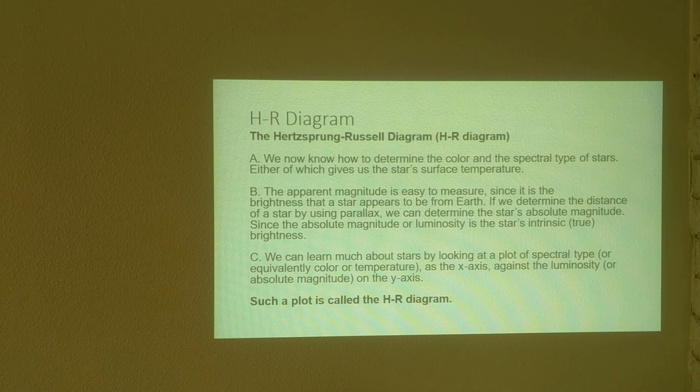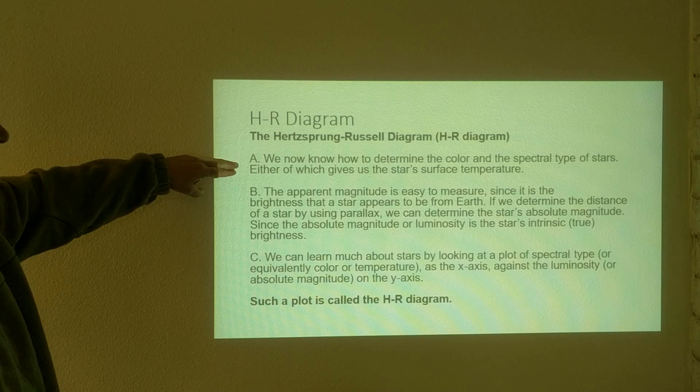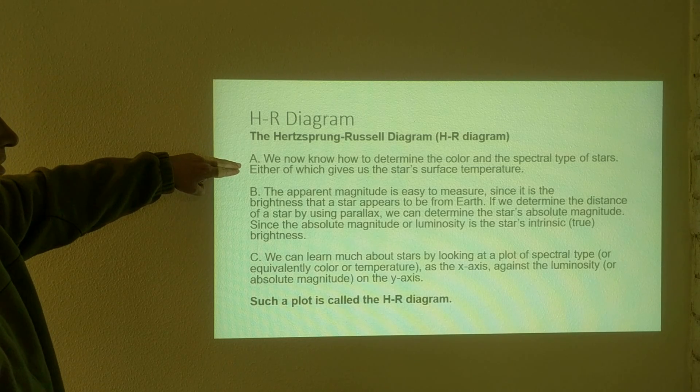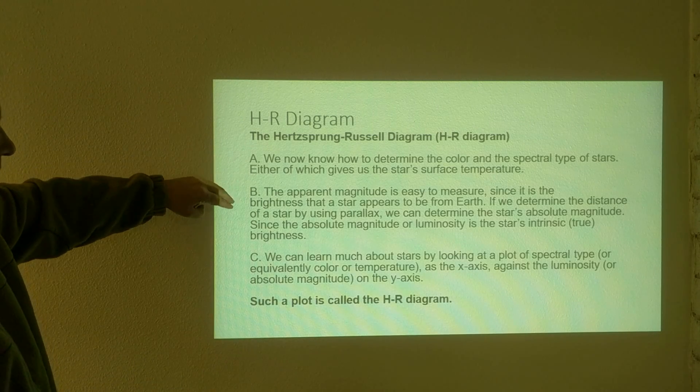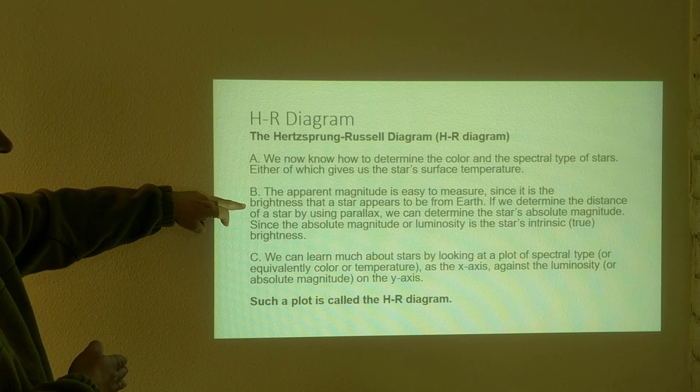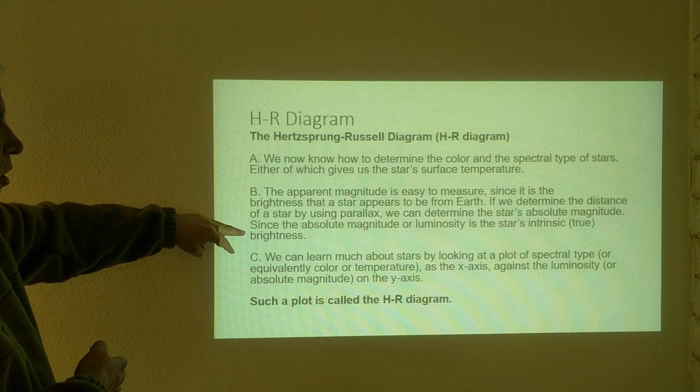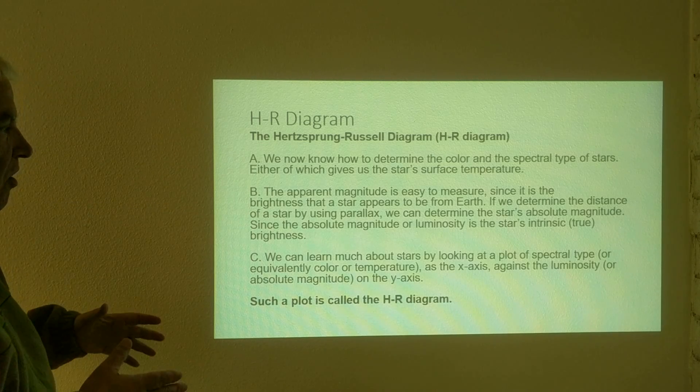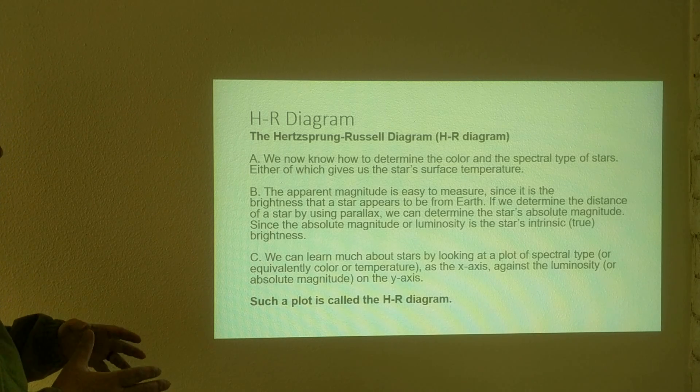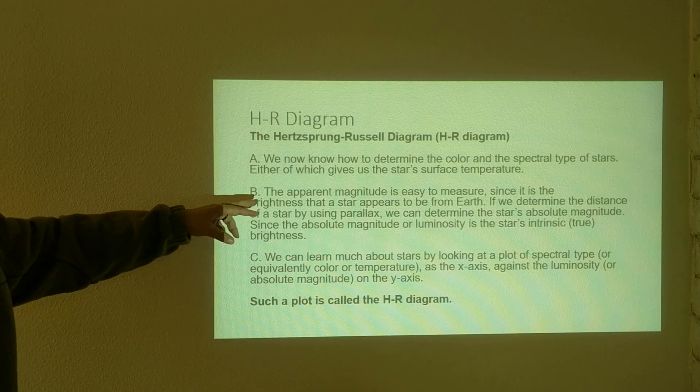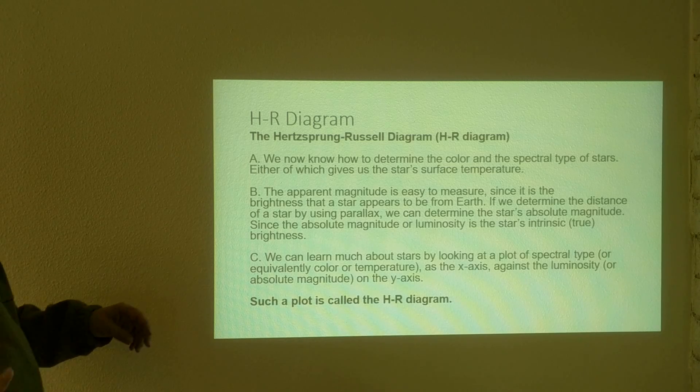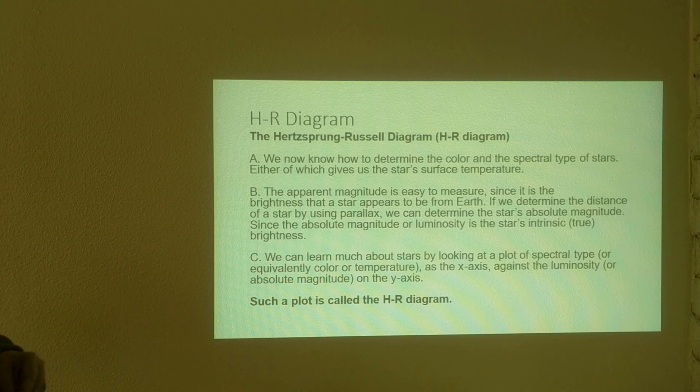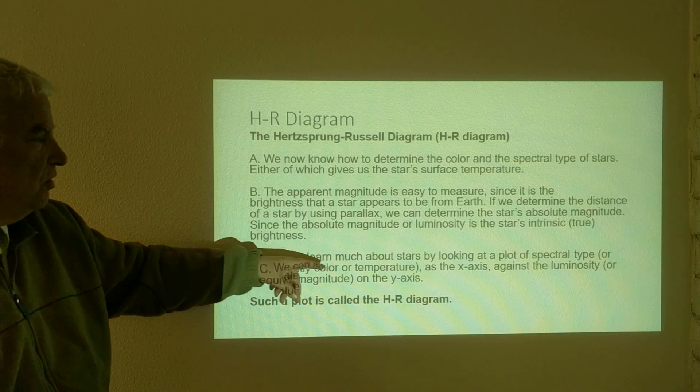Here we can learn much about stars by looking at a plot. If we plot the color or the temperature of the star or the spectral type, any one of those three, we plot the luminosity or the absolute magnitude. If you're doing this for a cluster of stars, we can even use the apparent magnitude because all the stars are at the same distance.